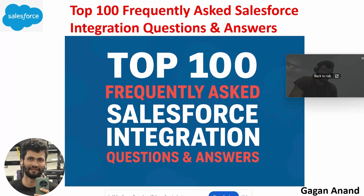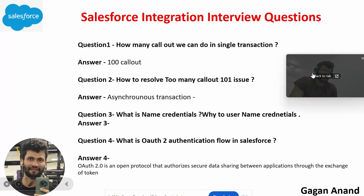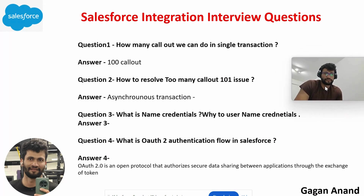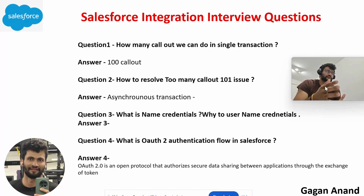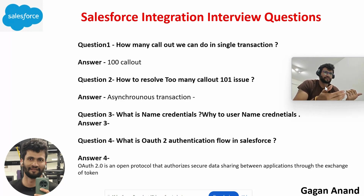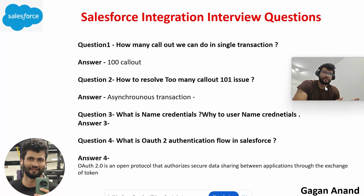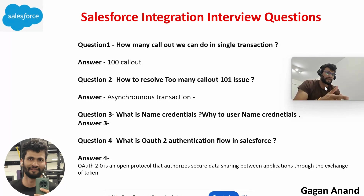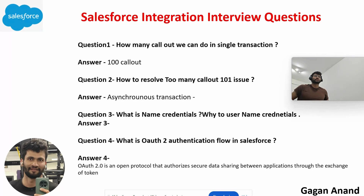First question: how many callouts can you do in Salesforce in a single transaction? Salesforce is a multi-tenancy system, and when you do a callout to a third-party system, Salesforce only gives us a 100 callout limit per single transaction. So if you're submitting an application and there are 100 users submitting at the same time, there are 100 callouts happening in a single transaction — that is your limit. If it's more than 100, it will fail, and you will get a 'Too many callouts: 101' error.